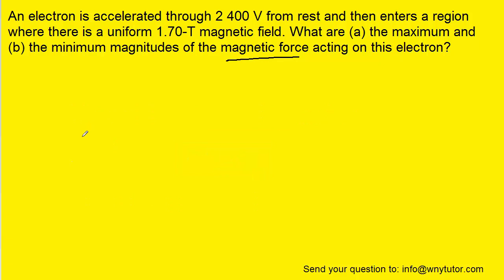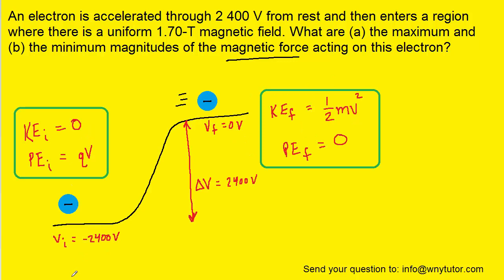And to do that, we want to understand some energy changes that are occurring in this process. So here is one representation of the types of energy changes that are taking place. We can assume that the electron is being released from rest, and therefore its initial kinetic energy will equal zero.